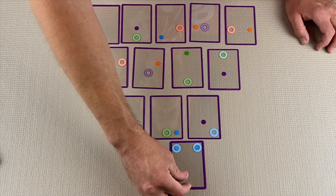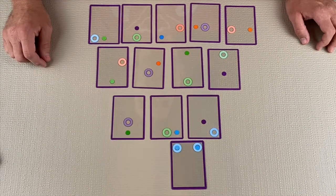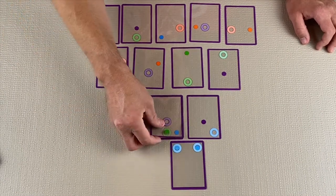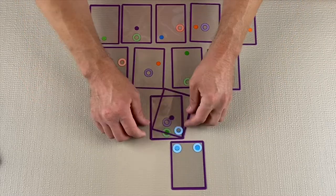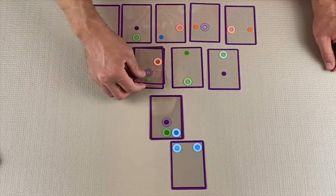During the game, players are trying to form swishes. Swishes are formed by stacking cards in such a way that the ball fits inside the hoop. The ball and the hoop must be the same color.